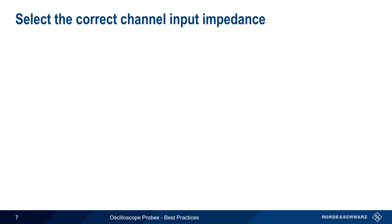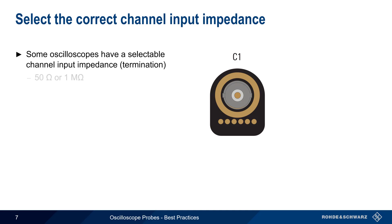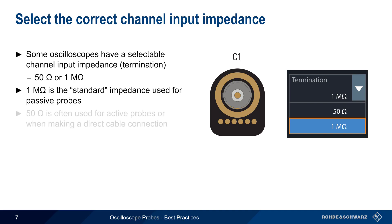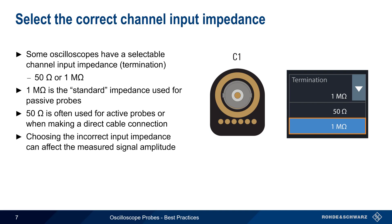Next we'll talk about setting the channel input impedance. Some oscilloscopes allow the user to select between a 50 ohm and a 1 megaohm input impedance or termination, configured through the scope interface on a per-channel basis. The standard input impedance for an oscilloscope input is 1 megaohm, and this is the proper setting when using passive probes. The optional 50 ohm termination is most often used when probing with active probes, or when directly connecting the instrument using a BNC cable. Many test and measurement instruments and RF devices use 50 ohms as their standard termination. It's important to choose the correct input impedance, since the wrong setting can affect the measured signal amplitude — for example, seeing twice the expected voltage when the termination is set to 1 megaohm instead of 50 ohms. In addition, the maximum safe input voltage is often much lower when the termination is set to 50 ohms instead of 1 megaohm.